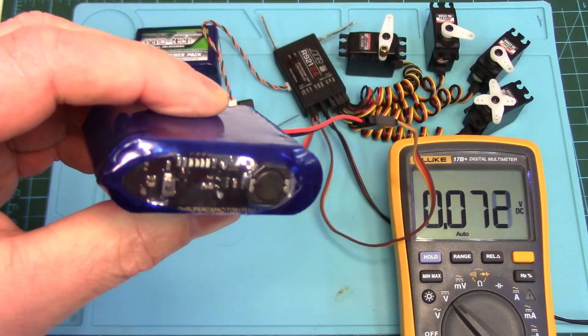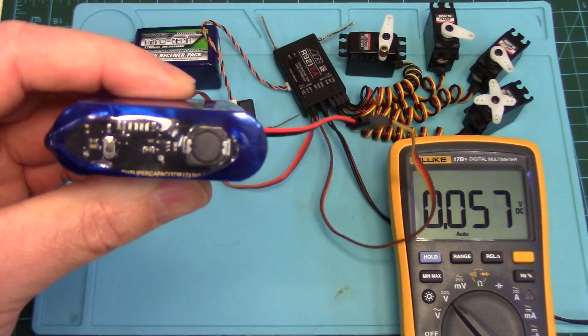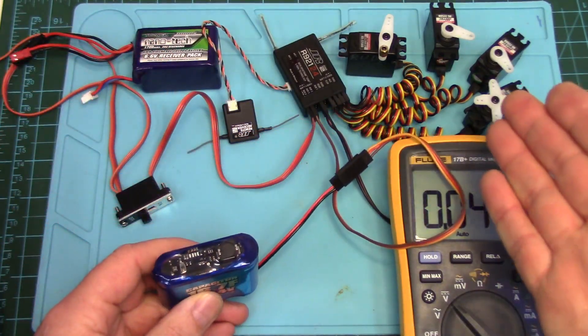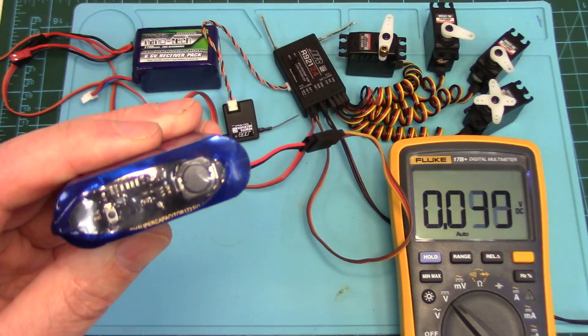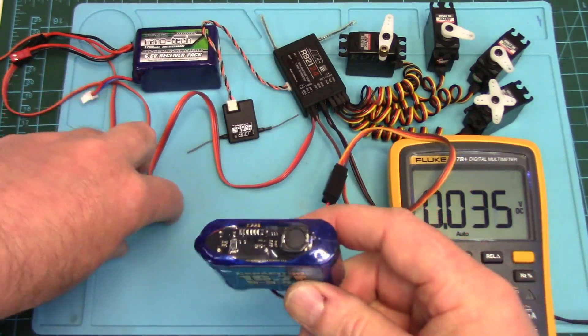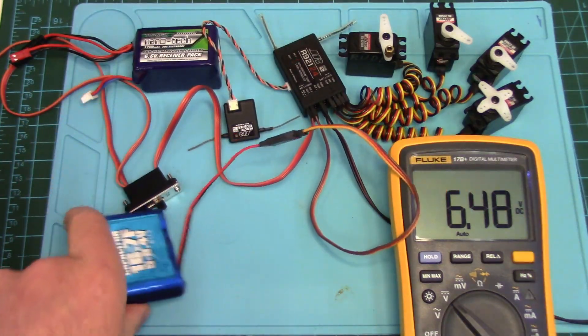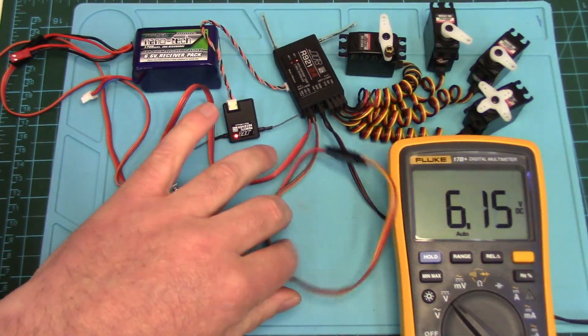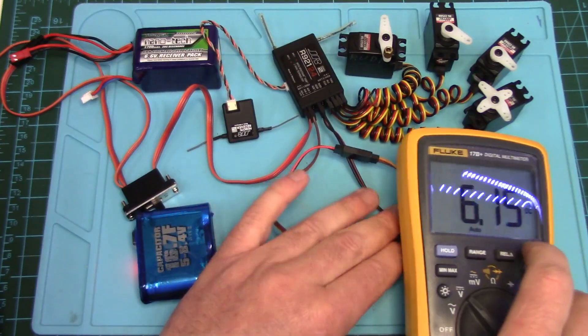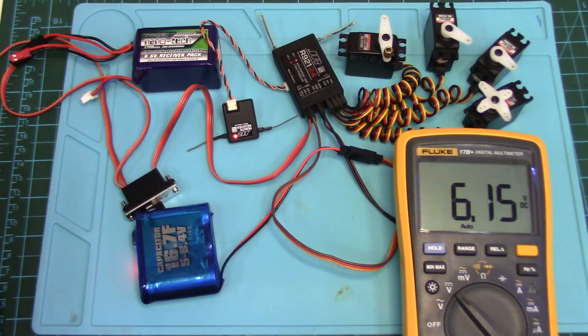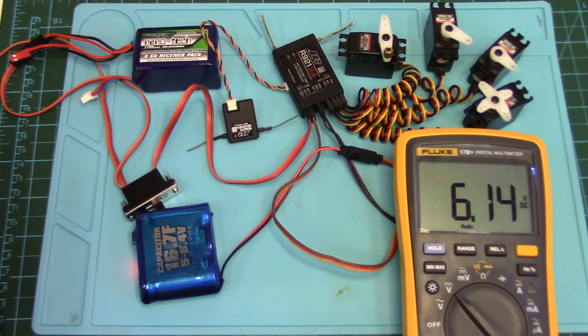Power back up, just get these things charging back up. So like I said, very much application dependent. Big helicopter with digital coreless or brushless servos, standard size servos going to be drawing a lot of current, and you'd get maybe 20 seconds to get your bird down if your BEC crapped out.